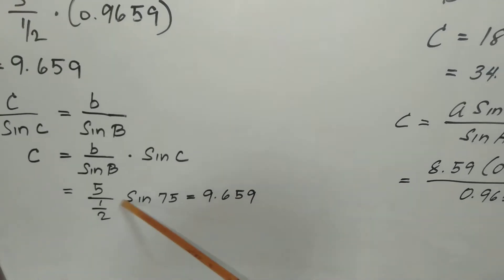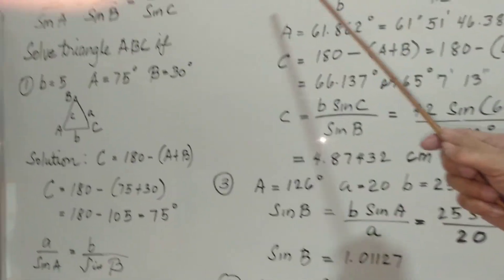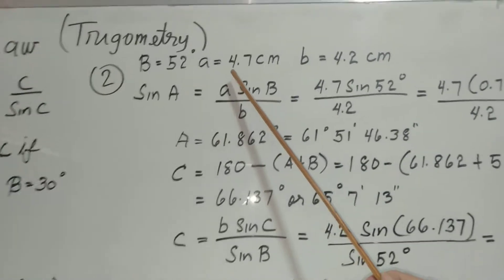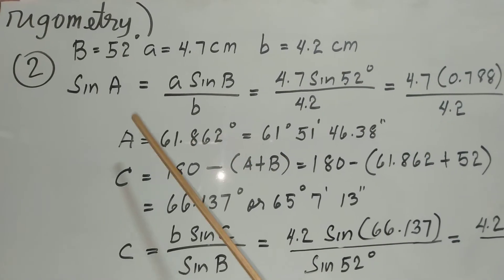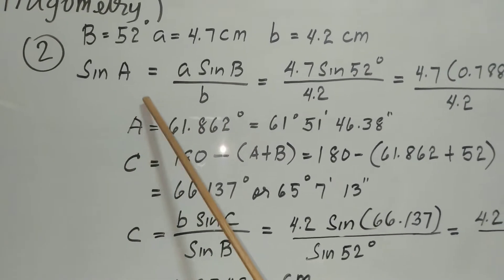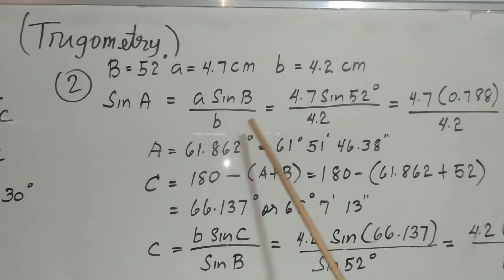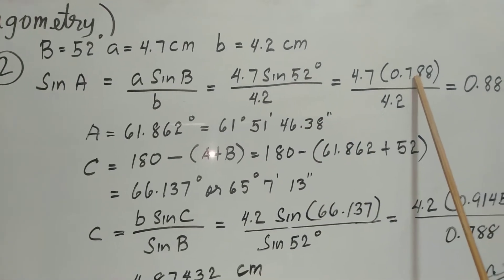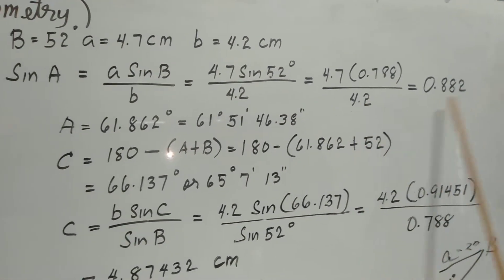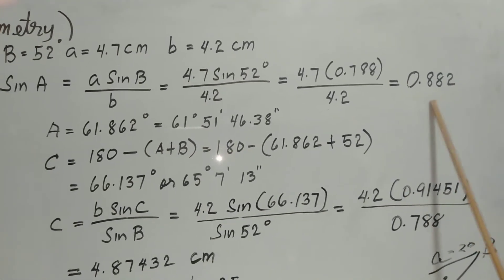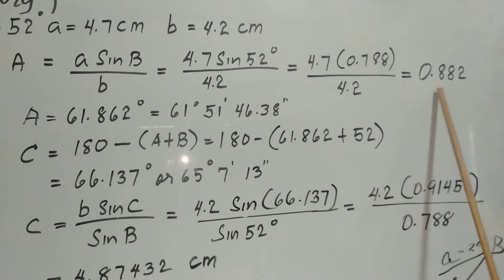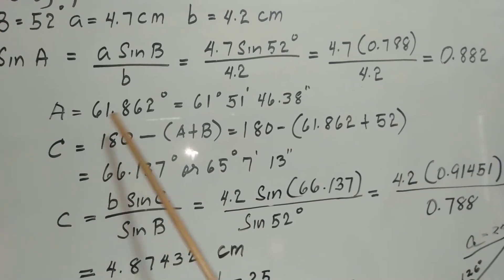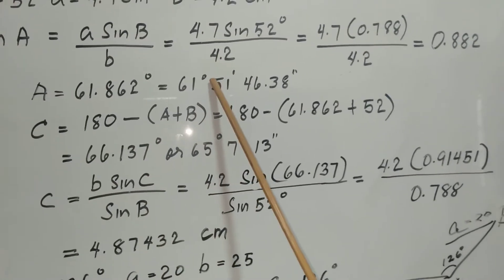For number two, we are given angle B equal to 52 degrees, side a equal to 4.7 centimeters, and side b equal to 4.2 centimeters. Using the Sine Law, sine A equals a times sine B over side b, which is 4.7 times sine of 52 degrees, approximately 0.788, over 4.2, giving us 0.882. Taking the arc sine of 0.882, we get angle A equal to 61.862 degrees, or 61 degrees 51 minutes 46.38 seconds.